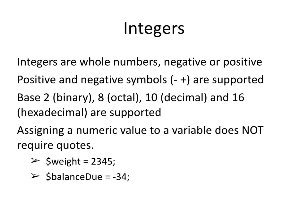The second primitive data type is integers. Integers are whole numbers, negative or positive. The plus and minus symbols to indicate positive or negative values are also supported. PHP also supports a variety of base numbers, including binary, octal, decimal, and hexadecimal. Assigning a numeric value to a variable does not require quotes. In the examples provided, the variable weight is given the value of 2345, while balance_due is given the value of negative 34. Please note that neither of these values has quotes around them.